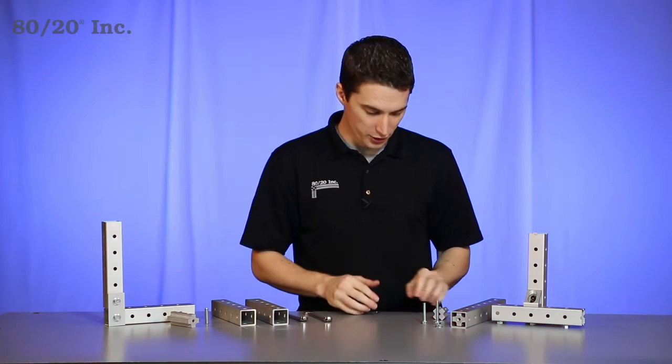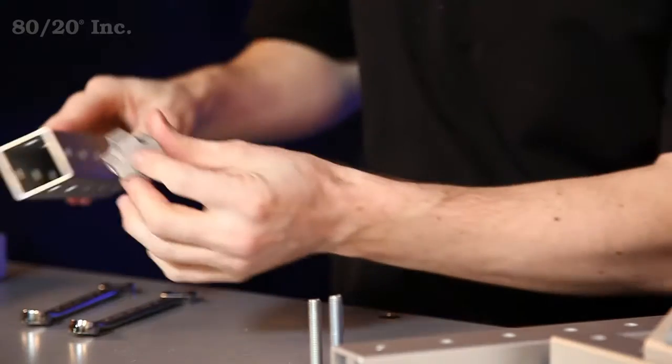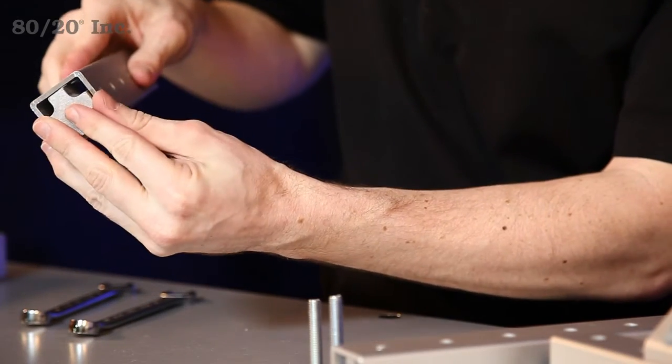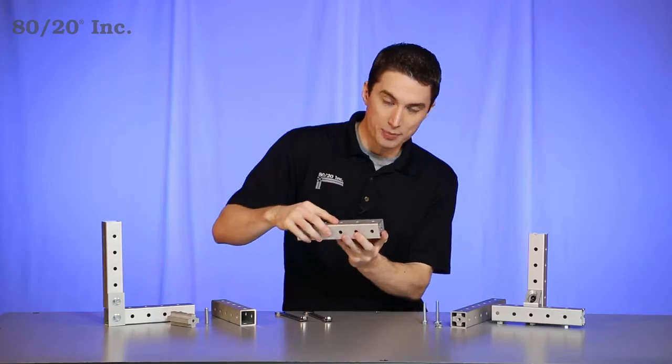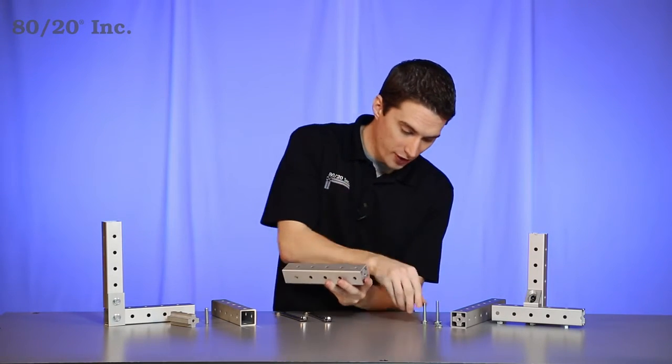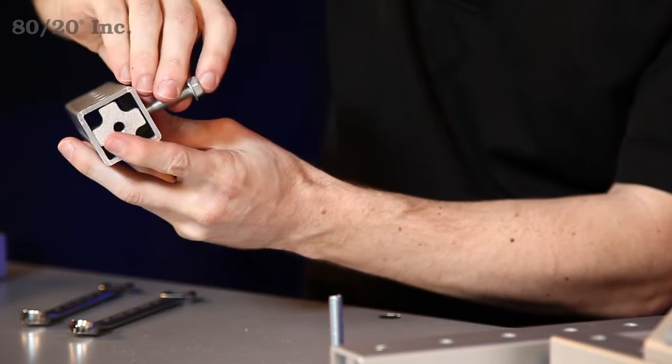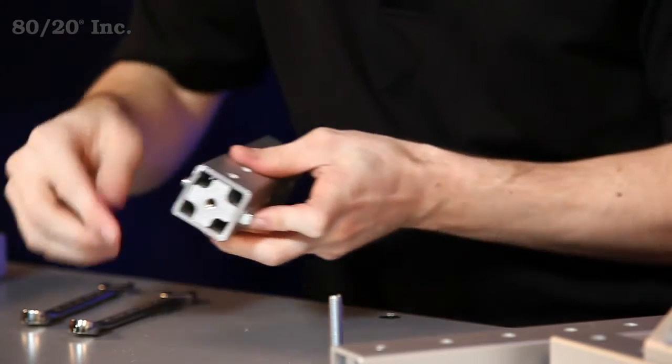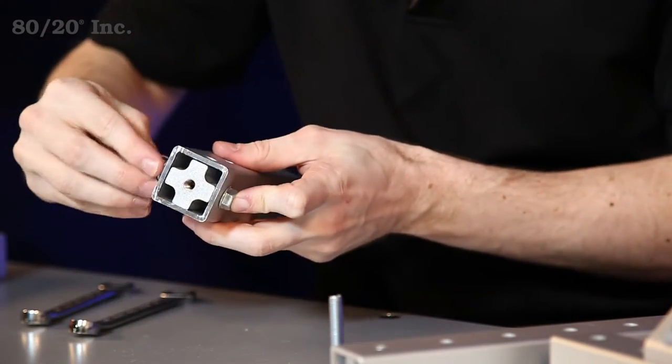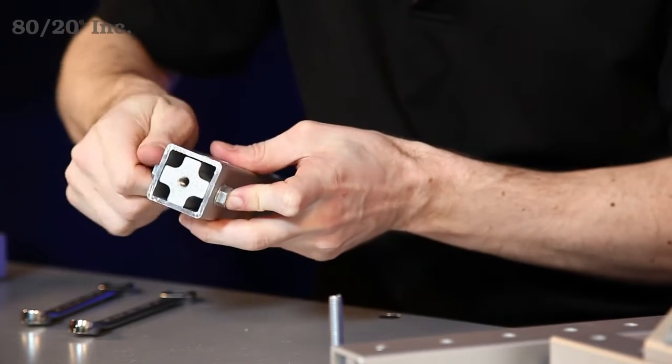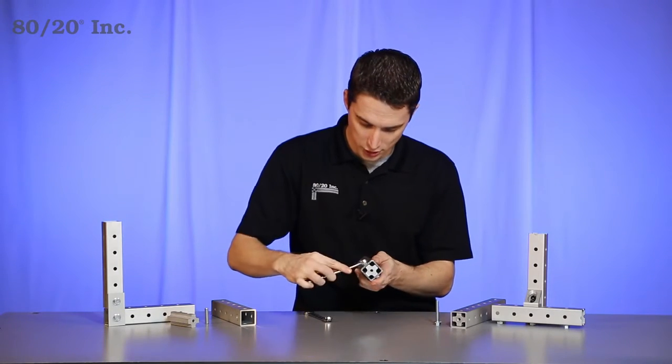So the first thing you're going to want to do is grab your insert and slide it into the end of one of your profiles. We'll line up the holes on the tube insert with the pre-drilled holes on the profile and slide our bolt through. We'll grab our hex nut and hand tighten that on, and we'll finish it off the rest of the way with our wrench.